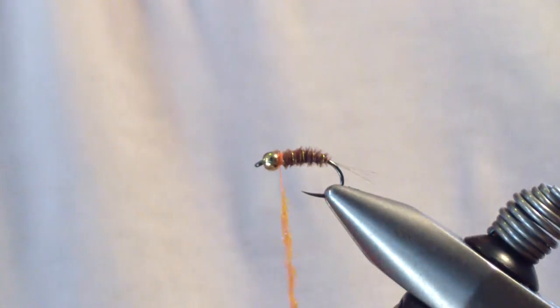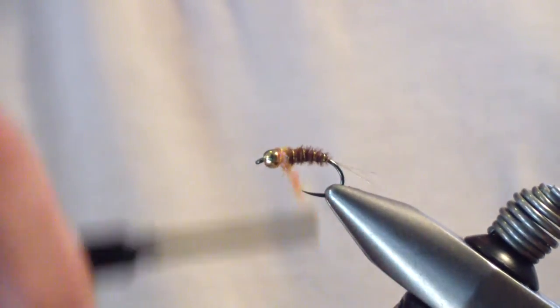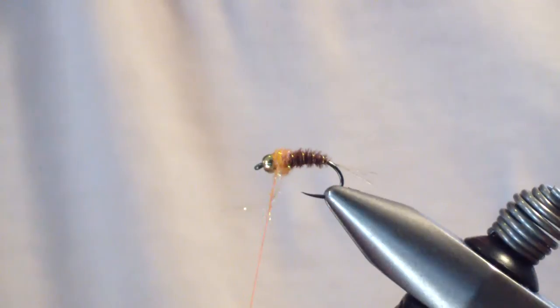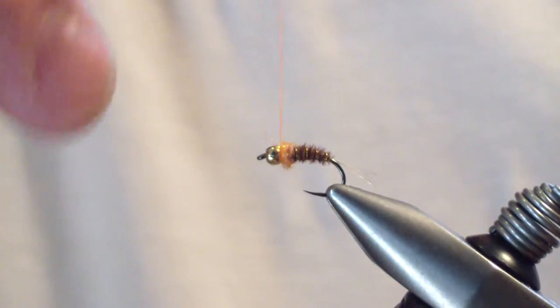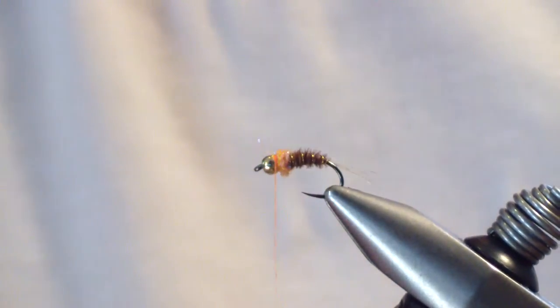And I dub about an inch. Maybe a little more than an inch. But only about an inch of dubbing. You don't need a lot. And you're going to build your thorax. Bring it up tight behind the bead. And then give a few wraps to acquire that orange, that fluorescent orange color as well. Not too much because you're going to whip finish there.